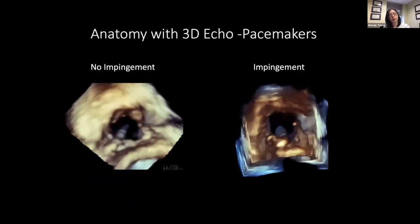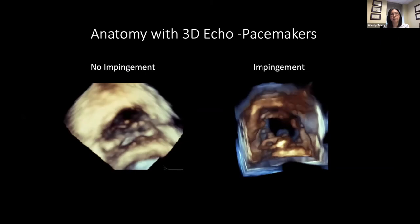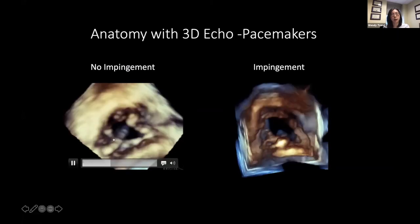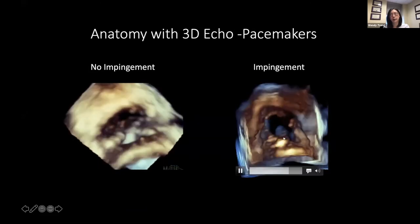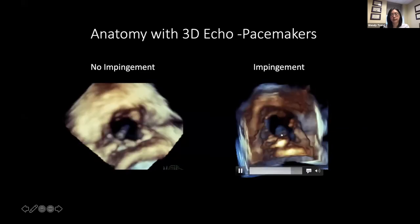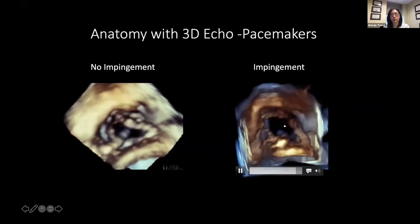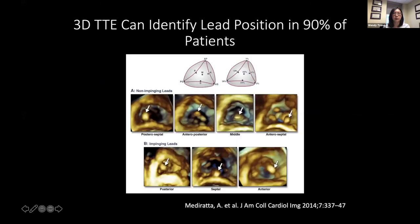One of the biggest things we've learned is appreciation of the role pacemaker leads play in tricuspid regurgitation. On 3D imaging, you can clearly see if the pacemaker lead is sitting in the commissure with no impingement on the leaflets and good coaptation. Or, sitting in the right ventricle looking up, you can see the lead holding back the septal leaflet while anterior and posterior leaflets try to coapt, creating a gap and causing tricuspid regurgitation. Lead position can be identified in about 90% of patients using 3D surface echo.